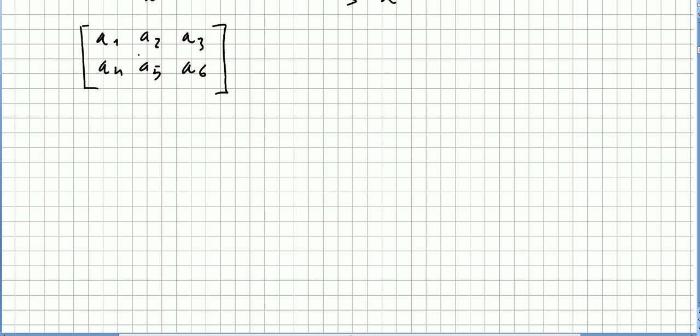So if we write this in an abstract way, so A has entries A1, A2, A3, A4, A5, A6. The transpose is going to be A1, A4, because I'm taking the first column, A2, A5, A3, A6.